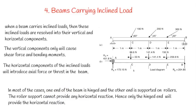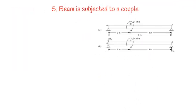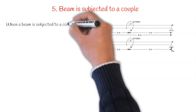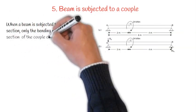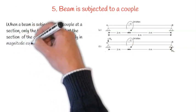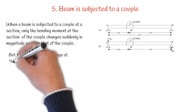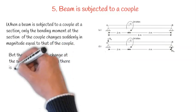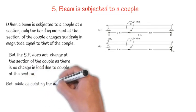5. Beam Subjected to a Couple: When a beam is subjected to a couple at a section, only the bending moment at the section of the couple changes suddenly in magnitude equal to that of the couple. But the shear force does not change at the section of the couple as there is no change in load due to the couple at the section.